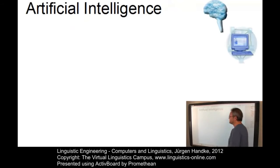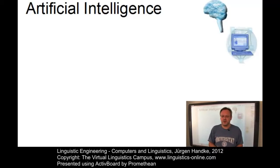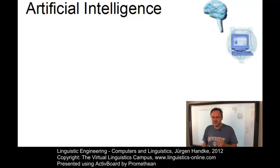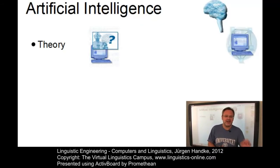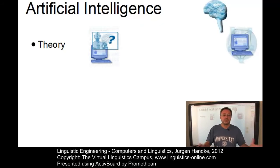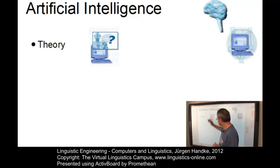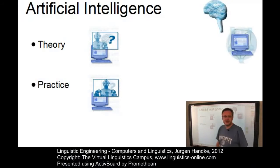Artificial intelligence, often abbreviated as AI, is the study and design of computer programs that behave intelligently. Thus, artificial intelligence is more than an engineering discipline — it is also a subject of scientific investigation. Researchers construct theories about what AI applications should be capable of and test them mathematically and experimentally. Consequently, there are two approaches: artificial intelligence theory and artificial intelligence practice.